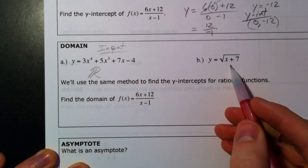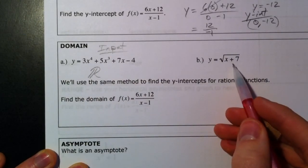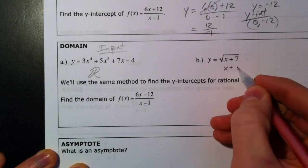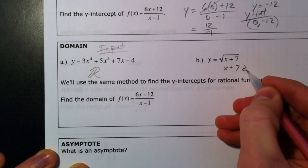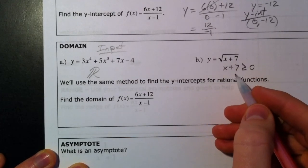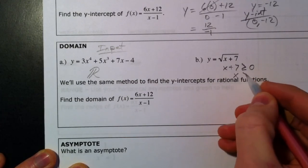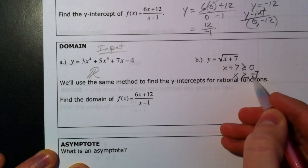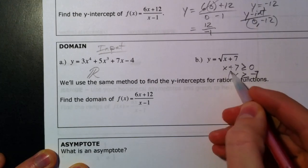The problem came into play with square roots, because what was underneath the square root, x plus 7, had to be greater than or equal to 0, because we couldn't take the square root of a negative number. So we'd set that greater than or equal to 0, subtract the 7, and so our domain was x has to be greater than or equal to negative 7.